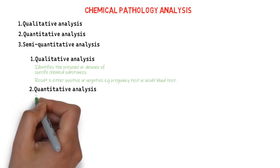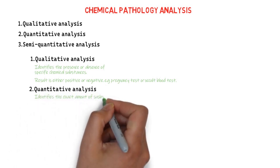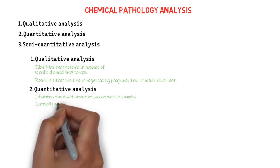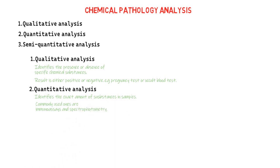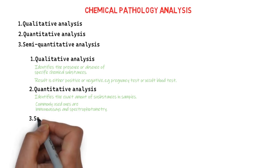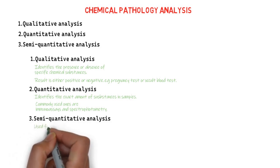The quantitative analysis focuses on knowing the exact amount or concentration of substances in the sample provided. The commonly used quantitative analysis in chemical pathology include immunoassays and spectrophotometry. Then we have the semi-quantitative analysis, which falls in between qualitative and quantitative analysis.